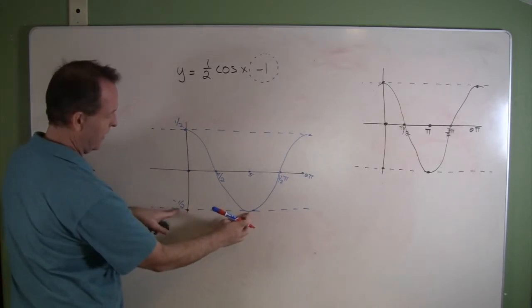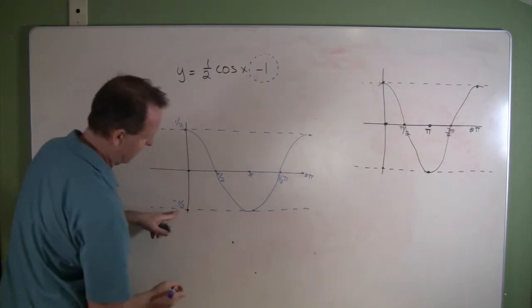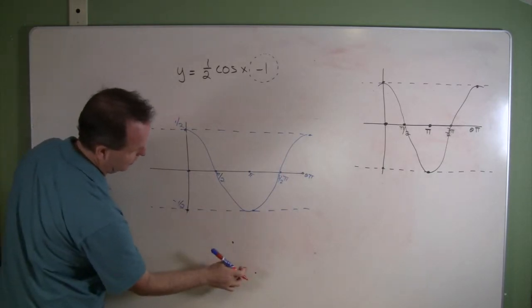This point right here was originally a negative one-half. So now we're going to make this point down at a negative one. So we're just taking every point and shifting it down one unit.